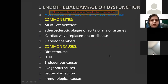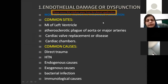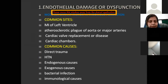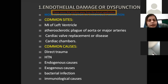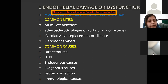First of all, we come to endothelial damage or dysfunction. The most important factor in thrombus formation is damage to the endothelium. The most common and dangerous sites are the left ventricle, where myocardial infarction can give rise to damaged endothelium. Common causes include either direct trauma to the vessel, atherosclerotic plaque of the aorta or the major arteries, cardiac valve replacement, or diseases involving the cardiac valve, which can also disrupt the normal endothelium. Similarly, any defect in cardiac chambers can also give rise to endothelial damage.